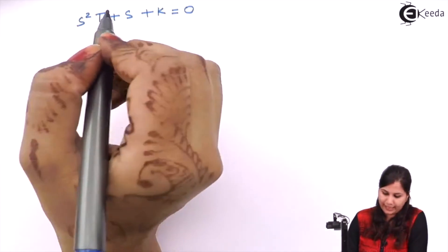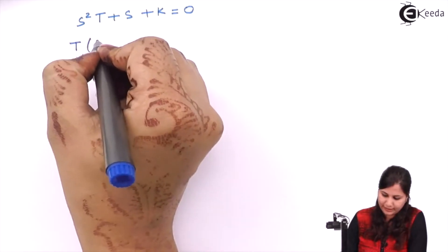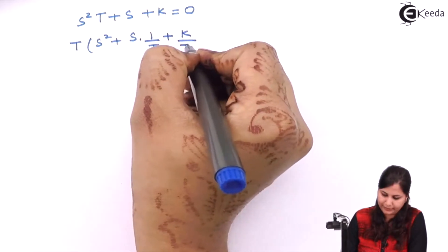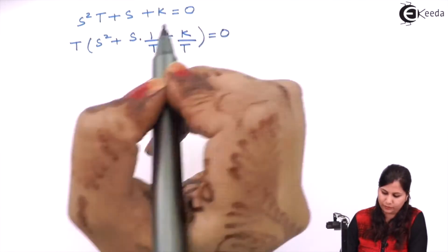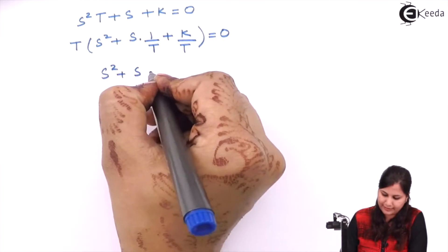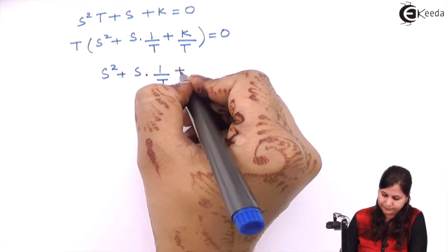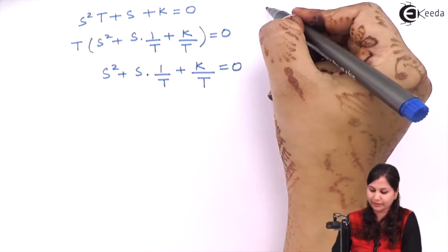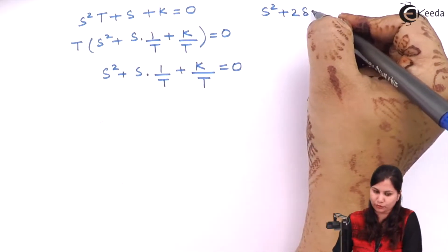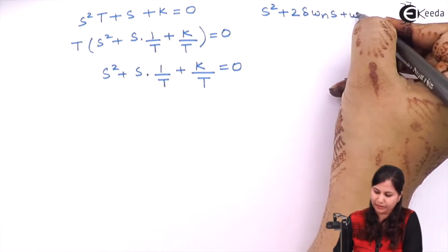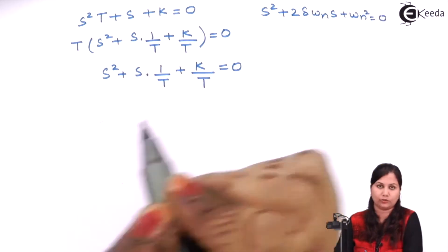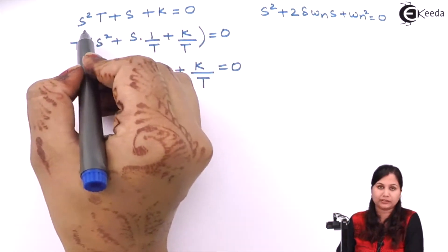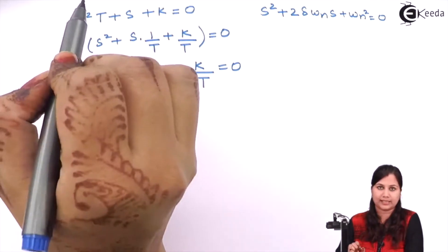Taking T as common we get: s² + s(1/T) + K/T = 0. We do this because we want to compare this equation with the standard form s² + 2δωₙs + ωₙ² = 0. Since the standard form has a coefficient of 1 for s², we must make the coefficient of s² equal to 1 in our equation as well.